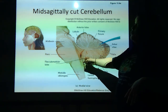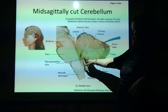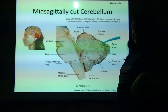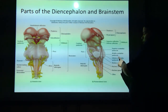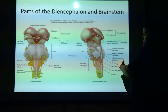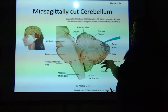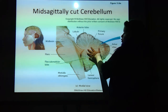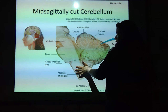And the flocculonodular lobe is kind of in the middle here. Remember those peduncles — the superior, middle, and inferior — they are actually responsible for allowing communication between the cerebellum and the different parts of the brainstem.